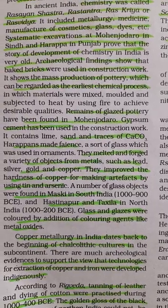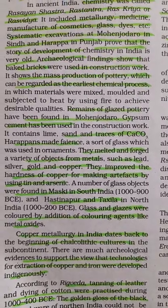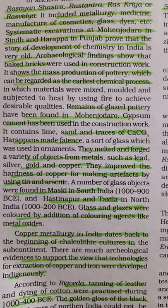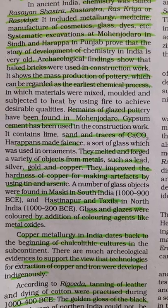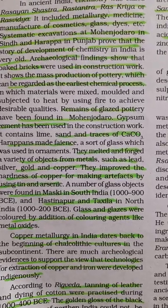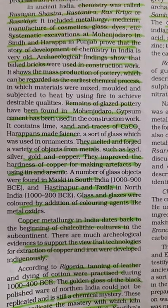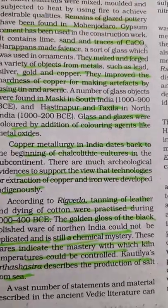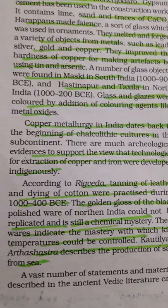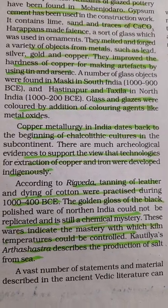Harappans made faience — a sort of glass used in ornaments. They melted and formed many objects from metals like lead, silver, gold, and copper, and improved the hardness of copper by using tin and arsenic. Many glass objects were found in Maski in South India, as far back as 1900 BCE, and in Hastinpur and Takshasila in North India. Glass and glazes were coloured by adding various colouring agents — you may have seen glass in green, red, yellow, and blue colours. There is also evidence of copper metallurgy in India dating back to the Chalcolithic culture, supporting that technologies for extraction of copper and iron were developed here.